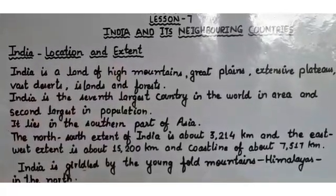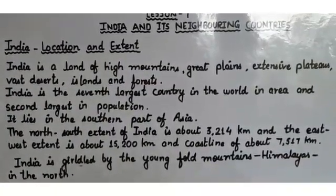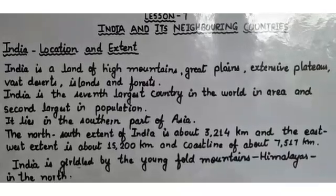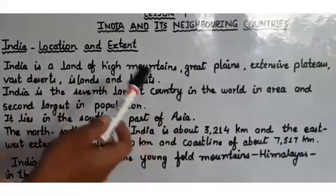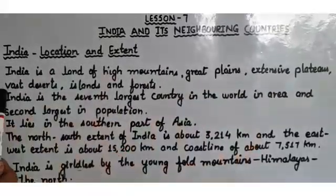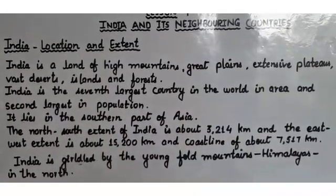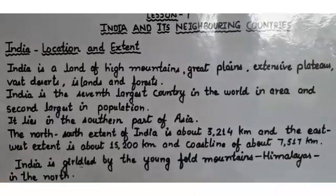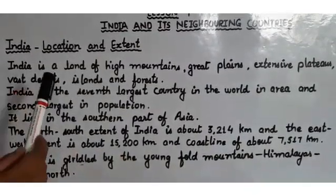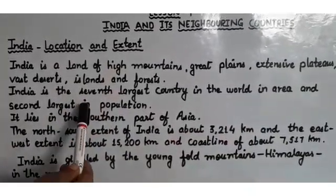We will look at where India's location is and where it extends. As we all know, India is a big and beautiful country. It is the land of high mountains, great plains, extensive plateaus, vast deserts, islands, and forests — so many physical features our country has. India is the seventh largest country in the world in terms of area.